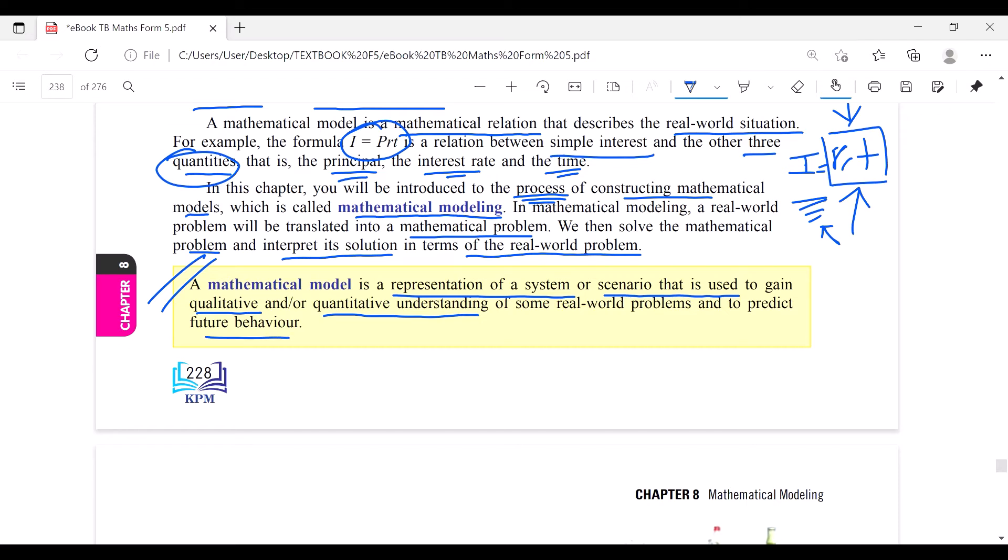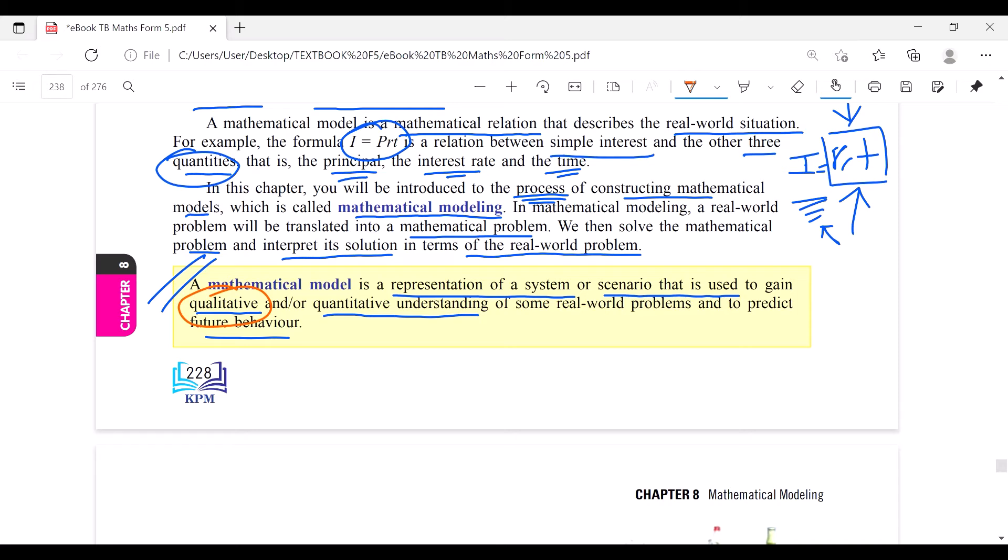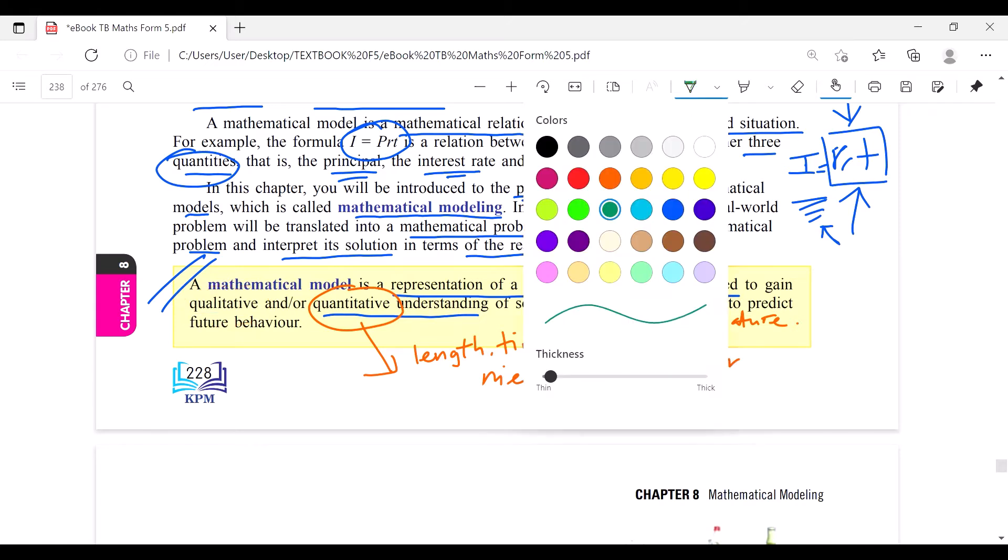What is this qualitative and what is quantitative? Quantitative, of course, numbers are used. We use numbers that we can measure, like the length, the time, mass, temperature, all the quantities that we can measure. The variable that we can measure, and the data is represented in numbers, it is called quantitative.